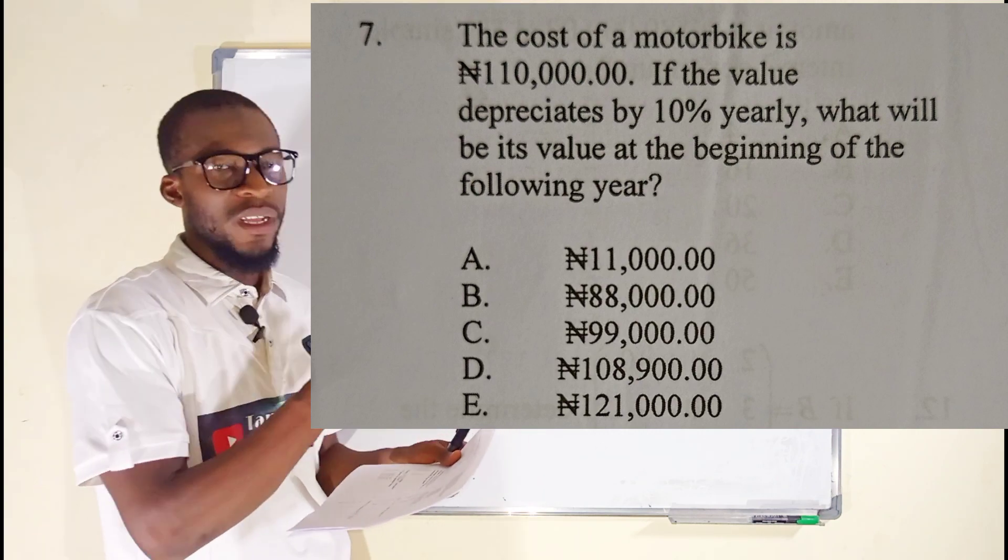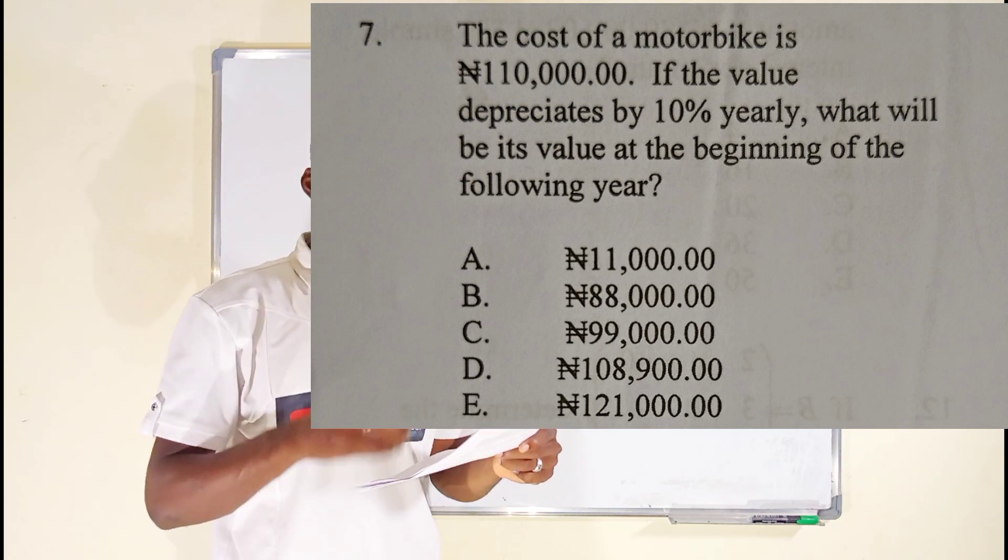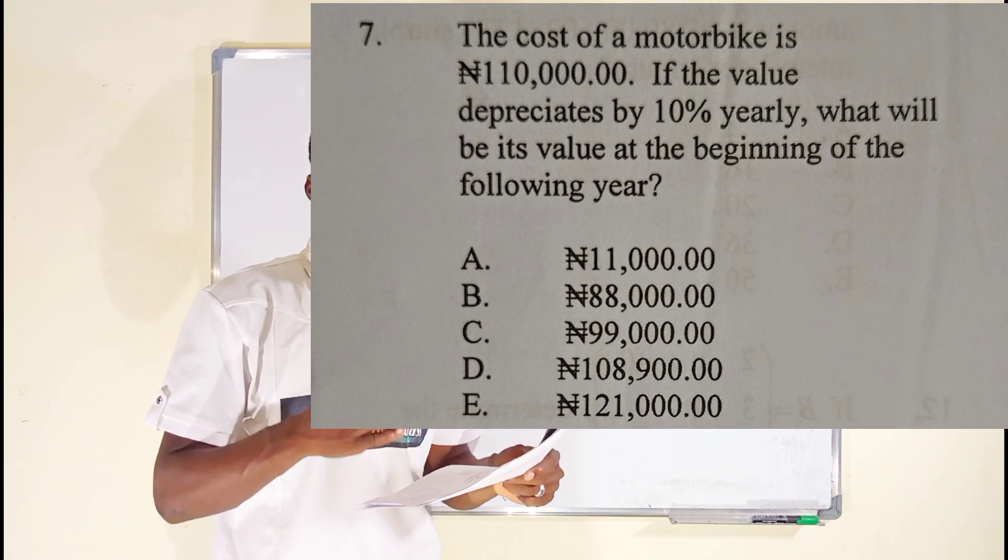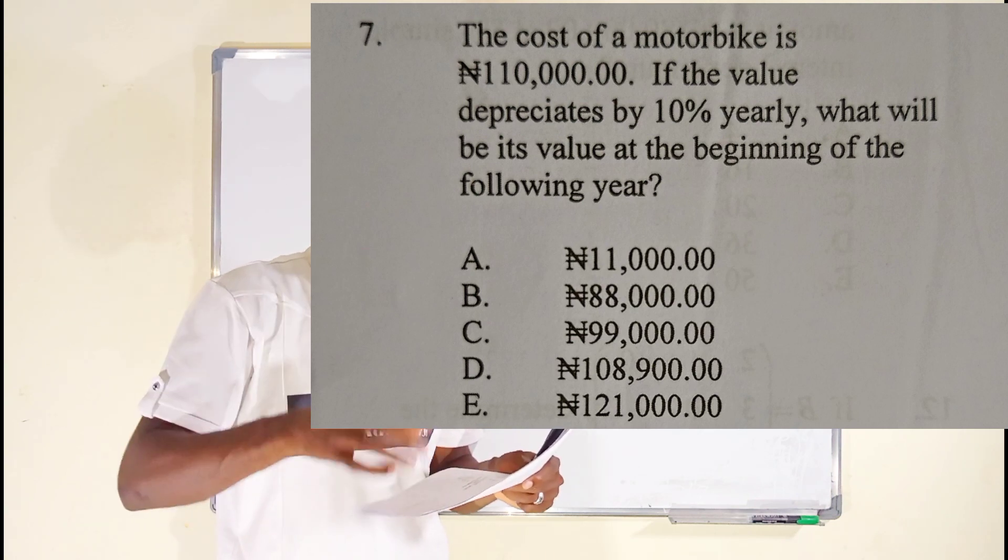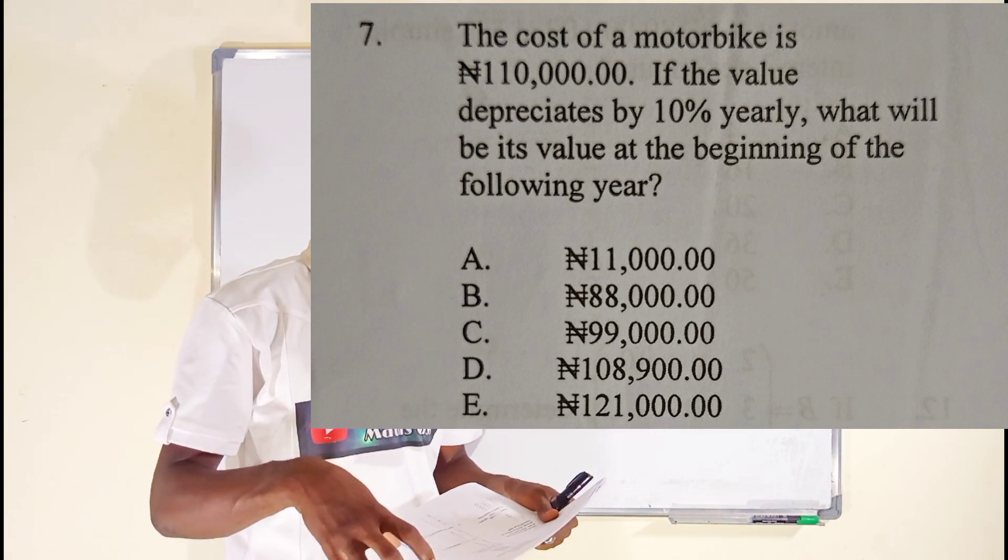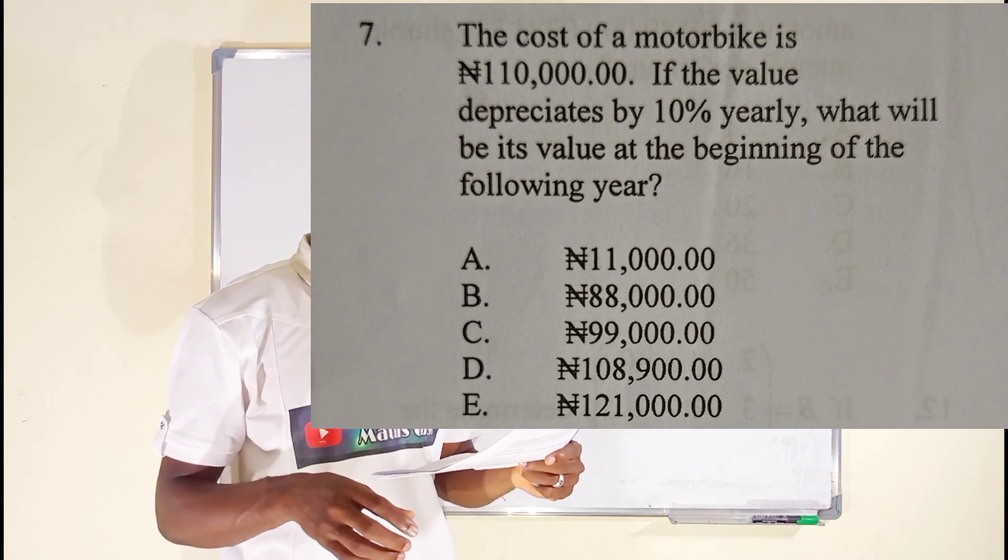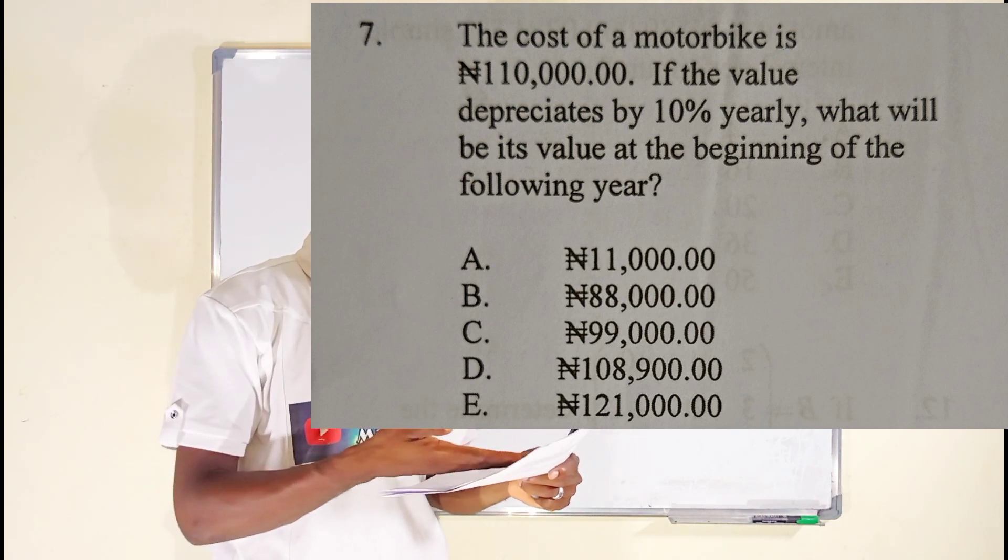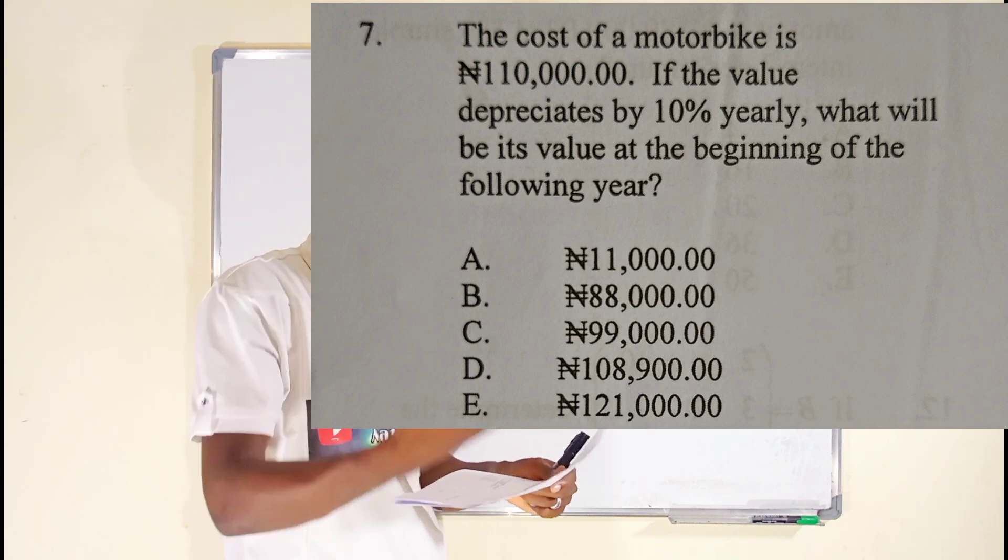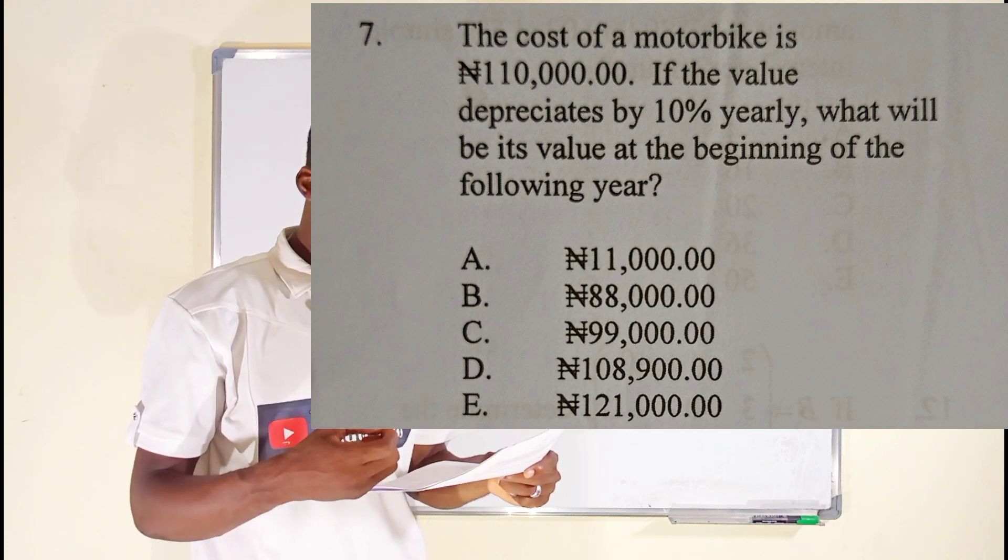So now let us understand this question before we start solving. The cost of a motorbike is 110,000 naira. You know we are now in 2021. This means that currently it is 110,000 naira, but it keeps on reducing, that is, depreciating. It depreciates by 10 percent, so every year the cost reduces by 10 percent.